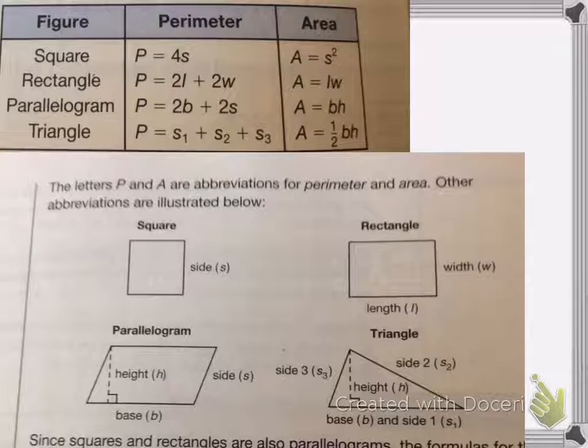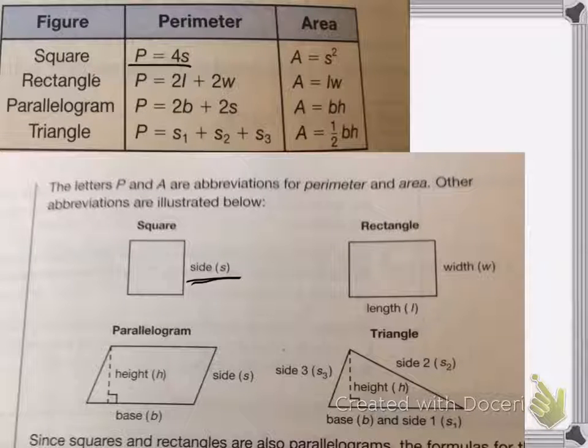So here we have the formulas for the square, rectangle, parallelogram, and triangle for the perimeter and the area. As you can see, square is the perimeter equals 4 times the side, the side here, and the area is side squared.